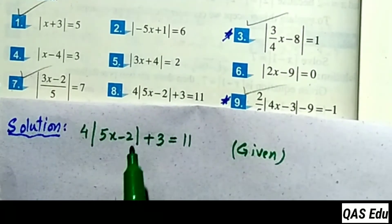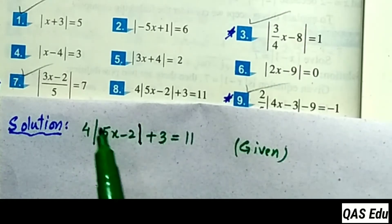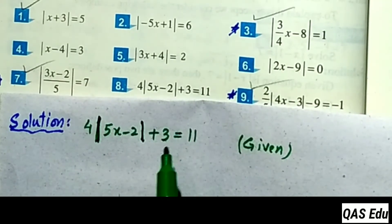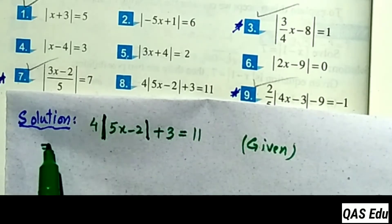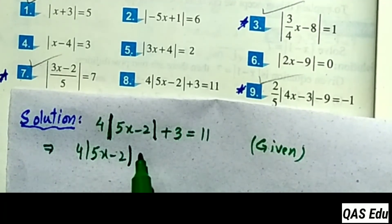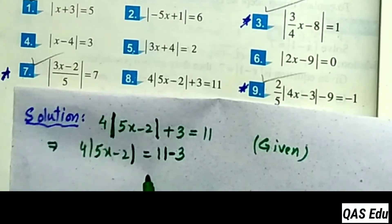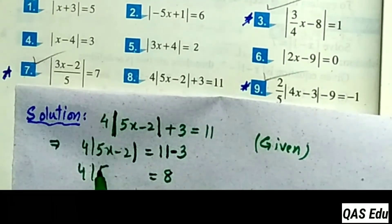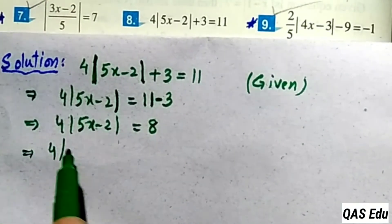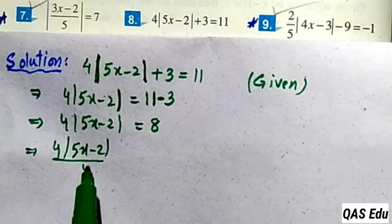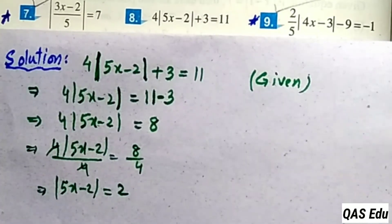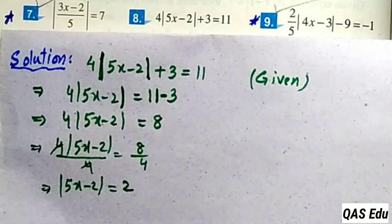There is a related number 8 in the equation. Moving plus 3 to the right, and isolating the absolute value term. Multiply both sides by 4 then divide to simplify. At the last stage, the absolute value remains. Moving plus 3 to the right as minus 3: 11 minus 3 gives 8. The absolute value of 5x minus 2 times 4. Dividing both sides by 4: 8 divided by 4 equals 2. So the absolute value of 5x minus 2 equals 2.